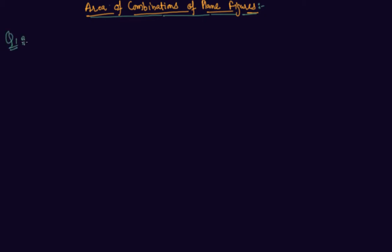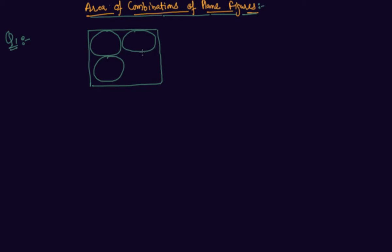This is a miscellaneous exercise in which miscellaneous questions come. This is a square given to us and there are four circles inside the square touching each other. My drawing is not that good, so kindly bear with that. The side of the square is 14 centimeters and we have to find out the remaining area. We are given only the side of the square.